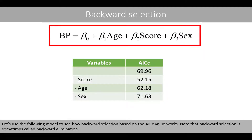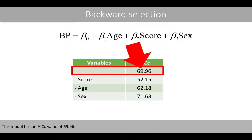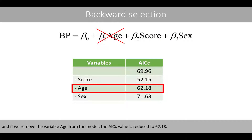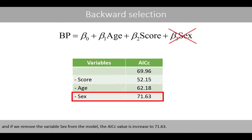Let's use the following model to see how backward selection based on the ISE value works. Note that backward selection is sometimes called backward elimination. This model has an ISE value of 69.96. If we remove the variable score from this model, the ISE value is reduced to 52.15. If we remove the variable age from the model, the ISE value is reduced to 62.18. And if we remove the variable sex from the model, the ISE value is increased to 71.63.